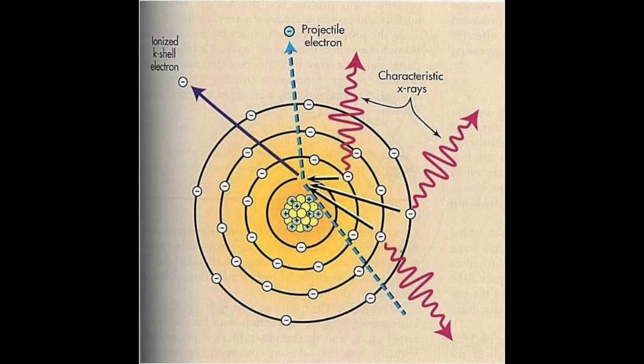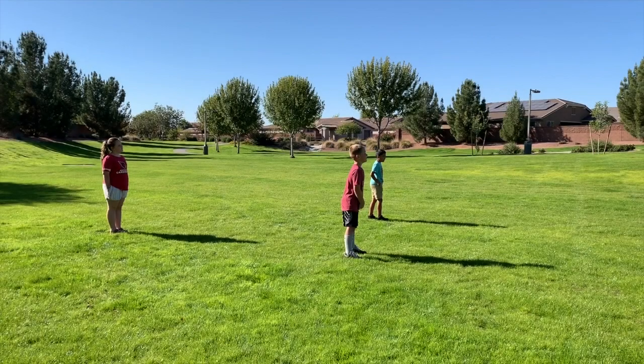This example is of characteristic interactions. Again, the girl is the nucleus, the boy in the red is an electron from the k-shell, and the boy in the blue is an electron from the l-shell.